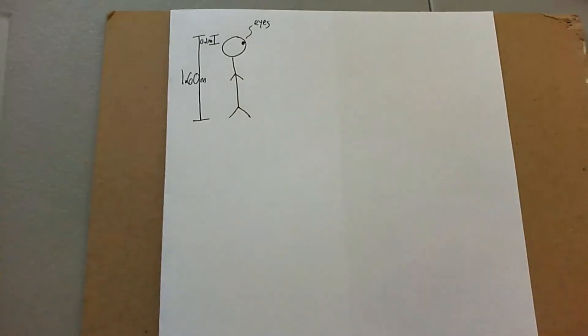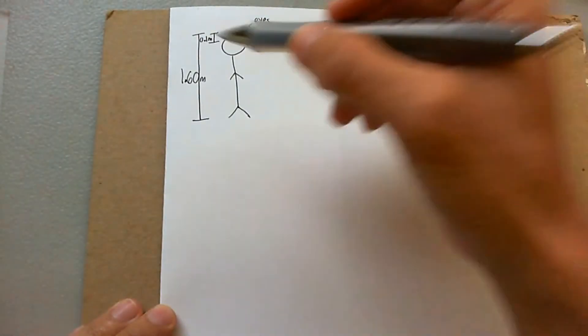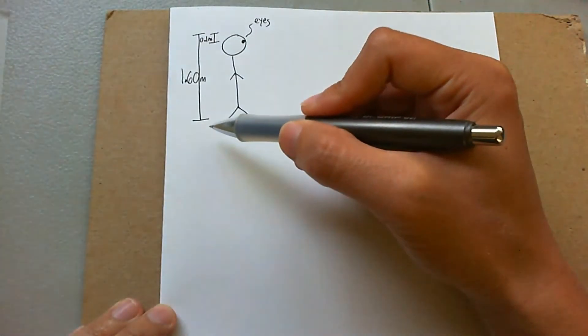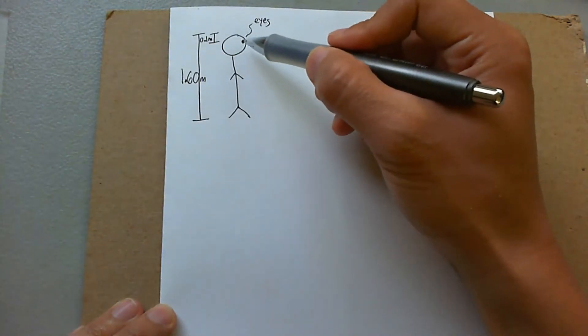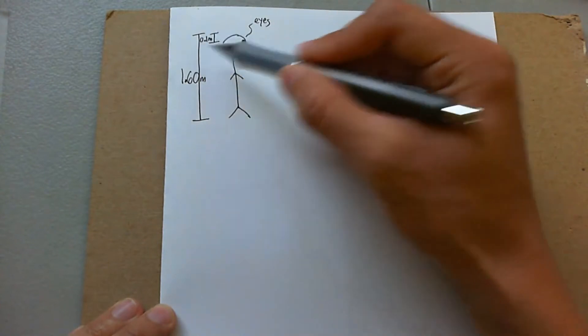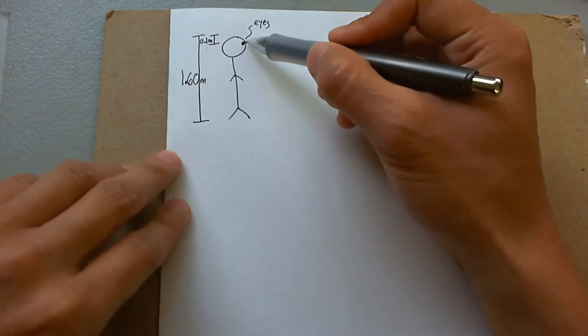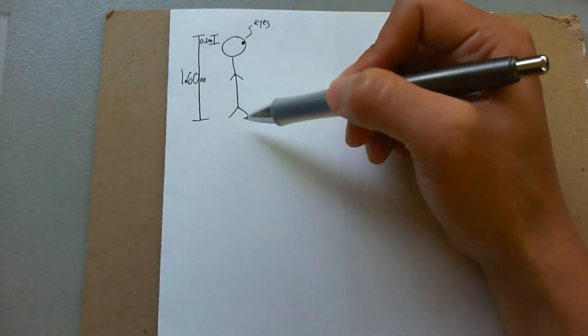In this problem, you can see I got my measurements for the lady who's looking into the mirror. She is 1.6 meters tall, and from the top of her head to her eyes is 0.1 meter. That means from her eyes to her feet is going to be the next 1.5 meters.